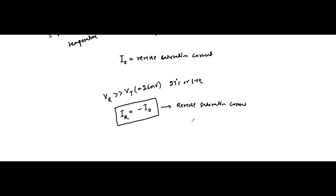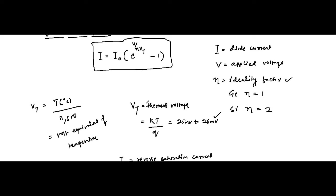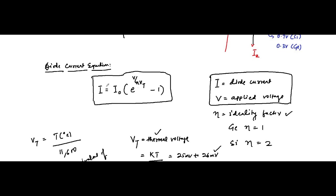The reverse saturation current I₀ is always mentioned in the question or in the specification sheet, and it can also be calculated from given data. To summarize: the reverse saturation current I₀, the ideality factor η, and the thermal voltage Vt are the constant values in the diode current equation. The diode current I and the applied voltage V are the only variable quantities. We will discuss many questions related to this diode current equation to understand all these concepts clearly.